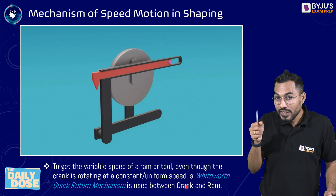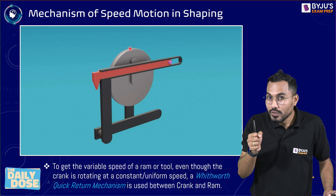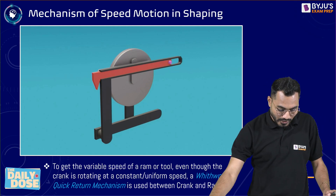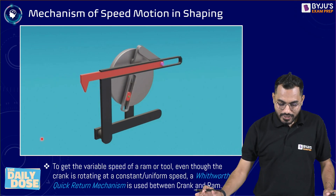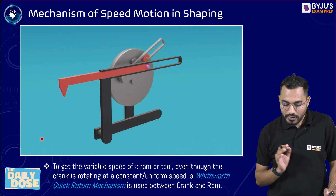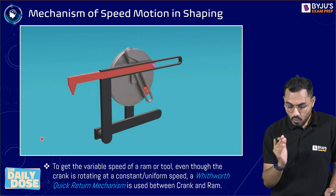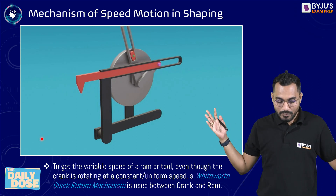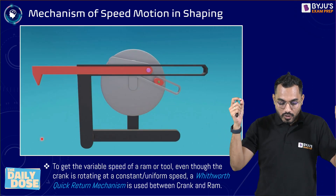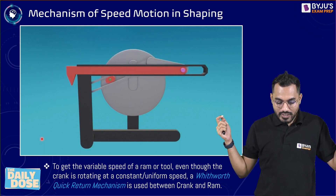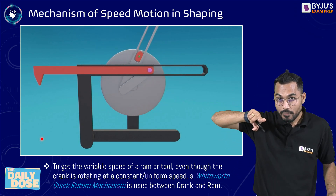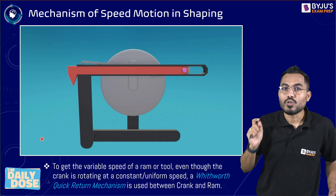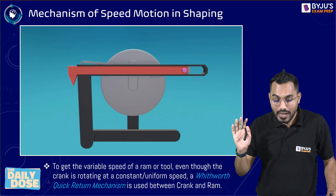In one rotation of the crank, the tool moves slowly in the forward stroke but returns with very high speed in the return stroke. You can clearly see from the animation: forward stroke is slow, return stroke is at high speed. This is the Whitworth Quick Return Motion Mechanism — one complete rotation of the crank gives optimal forward velocity and very high return velocity.